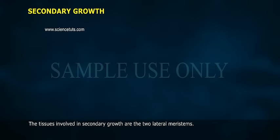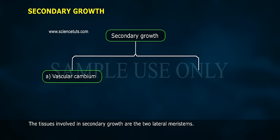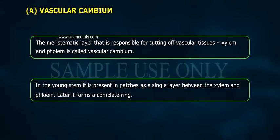The tissues involved in secondary growth are the two lateral meristems: A. Vascular cambium and B. Cork cambium. The meristematic layer that is responsible for cutting off vascular tissues — xylem and phloem — is called vascular cambium. In the young stem, it is present in patches as a single layer between the xylem and phloem. Later, it forms a complete ring.